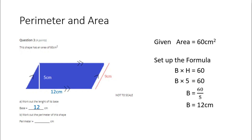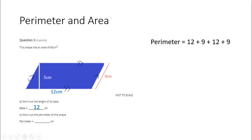I'll label that on my diagram because I'm sure that's going to help me with the next part of my question. We're then asked to work out the perimeter of the shape. The perimeter is the sum of all of the outer sides. As this is a parallelogram, you can see by the markings that the two opposite sides are equal. So the perimeter is going to be 12 plus 9 plus 12 plus 9, which gives us 42 centimeters.